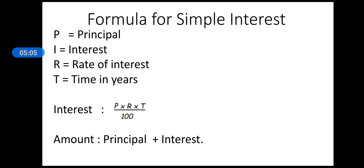For this lesson we need some formulas to calculate simple interest and amount. P stands for principal, I stands for interest, R stands for rate of interest, and T stands for time in years. The formula for interest is: I = (P × R × T) / 100, that is principal multiplied by rate of interest multiplied by time in years, divided by 100. To find the amount, we use: Amount = Principal + Interest.